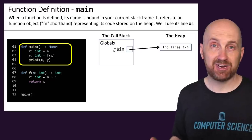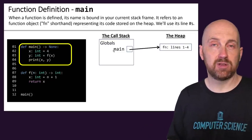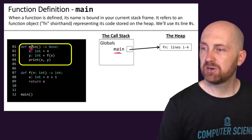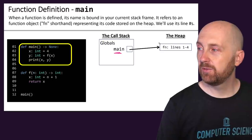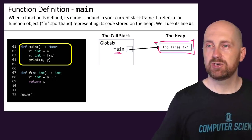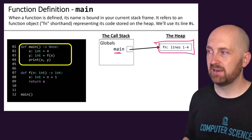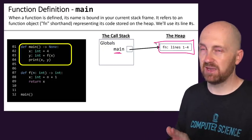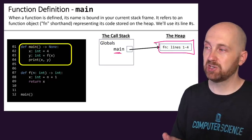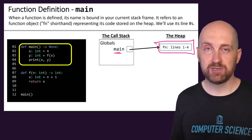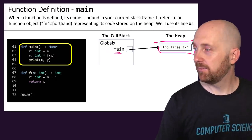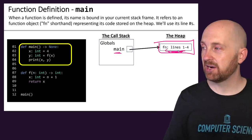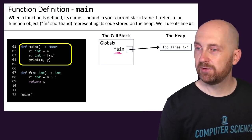If we had defined some named constants, they would also be bound here, and we'll look at that in a future example. Here, we're defining the main function, which is bound to its definition. For now, we illustrate the function definition as a box on the heap labeled 'fn' for function, with the line range — lines 1 through 4. So the object on the heap refers to the function defined on lines 1 through 4.